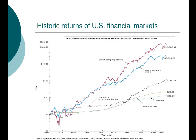We mentioned that one way to look at risk is to look at how jagged the line is. If the line is very jagged, it tells us that the price of the investment fluctuates a lot, meaning it's risky. We want to have a more quantitative way to define risk, and that's what we're going to do next.